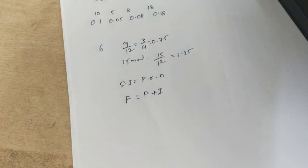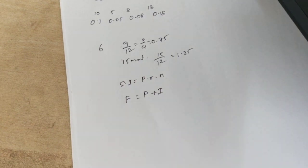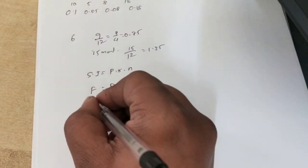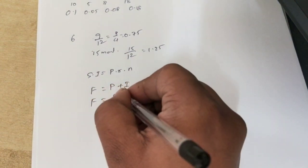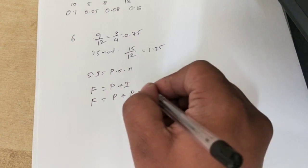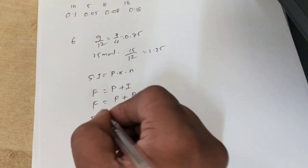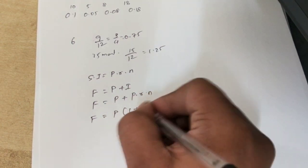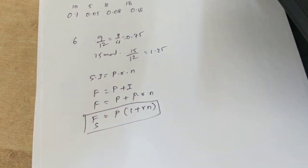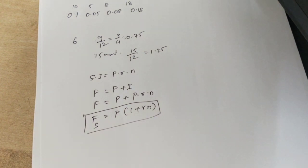Substituting the SI formula into the future value equation: F = P + P×r×n. Taking P as common, the future value of simple interest is F = P(1 + rn). So the two formulas are: SI = P×r×n and Future Value = P(1 + rn).